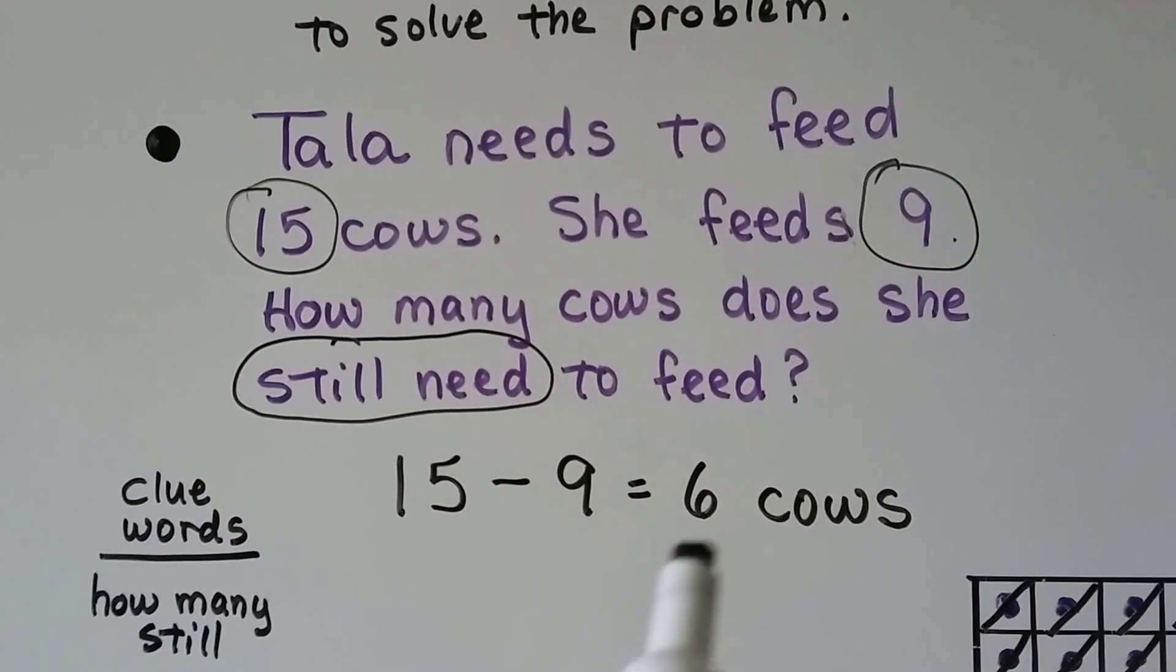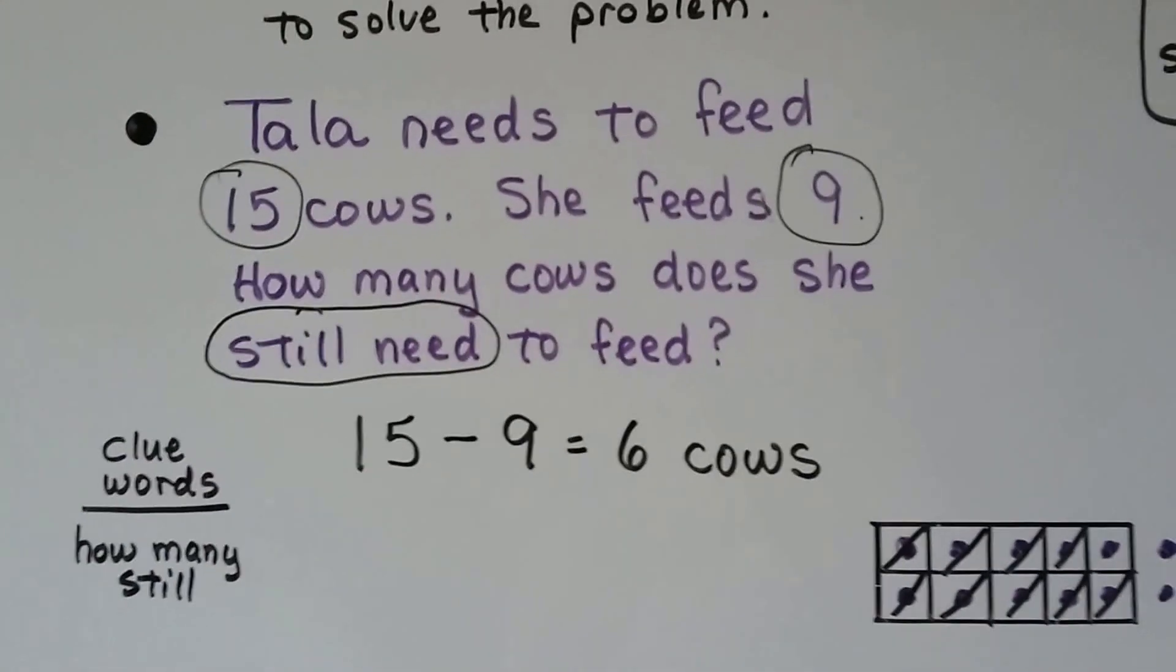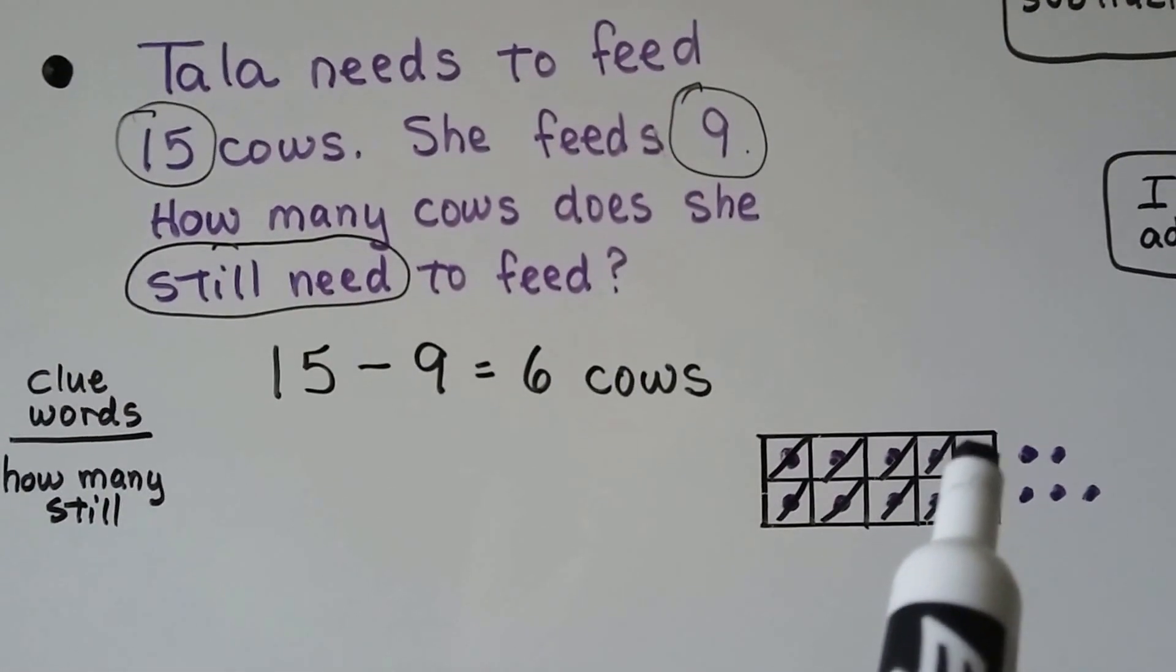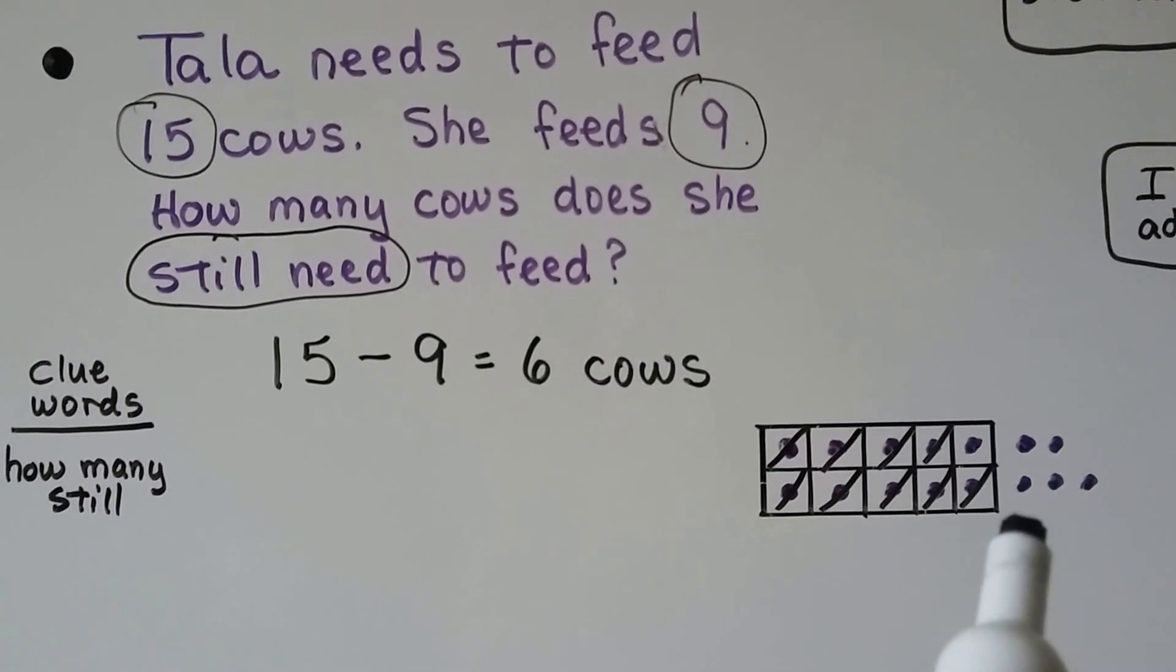So we have 15 minus 9, that equals 6 cows. We can even use a 10 frame. We can cross off 9 of them and count how many are left over: 1, 2, 3, 4, 5, 6. She still has 6 cows to feed.